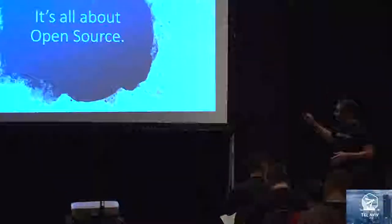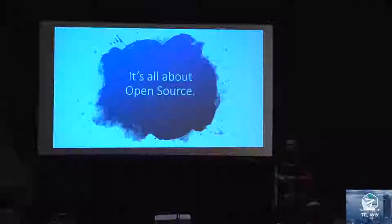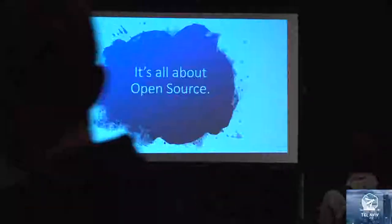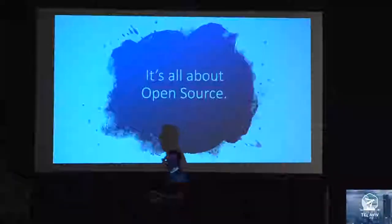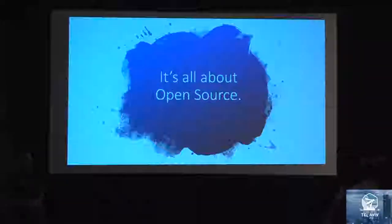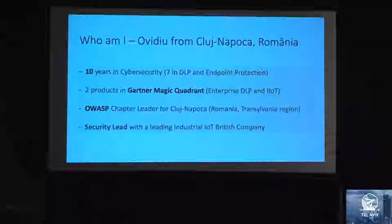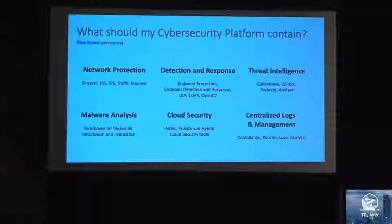If you need any of the tools you're going to see here, start using them and move to the commercial ones when they're not sufficient for you. We're going to be covering mostly what's called the blue team — the part that takes care of securing the infrastructure and the endpoint. This is me. I came from a company that develops endpoint protection and data loss prevention. Now I'm working in a British company in the industrial IoT sector. We had some Magic Quadrant products in the last few years.